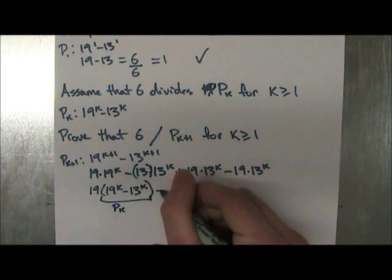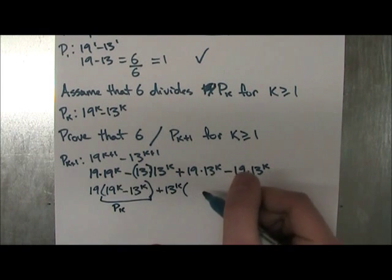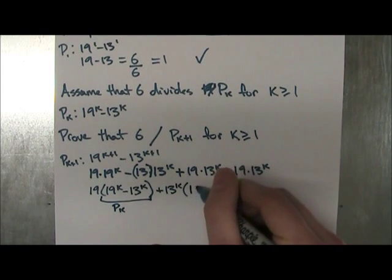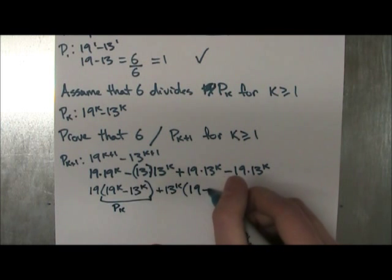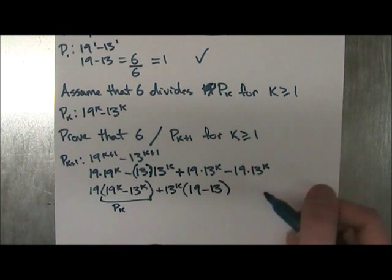So then we're going to take out 13^k and we're going to get 19 from here. And we're going to get minus 13 from there.